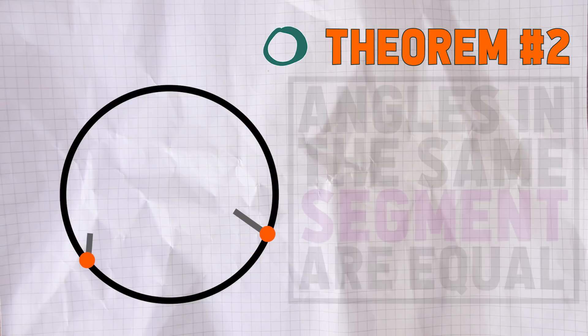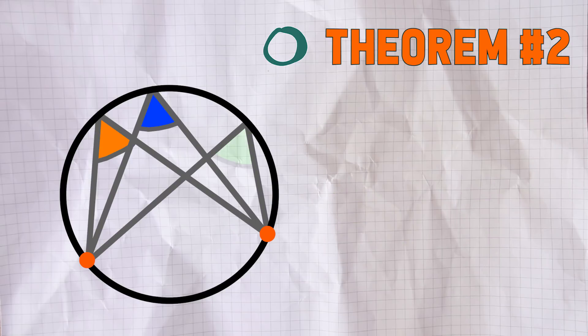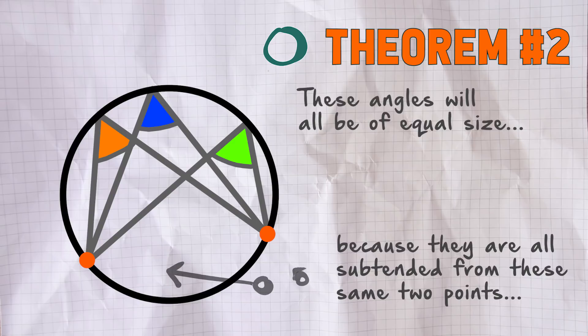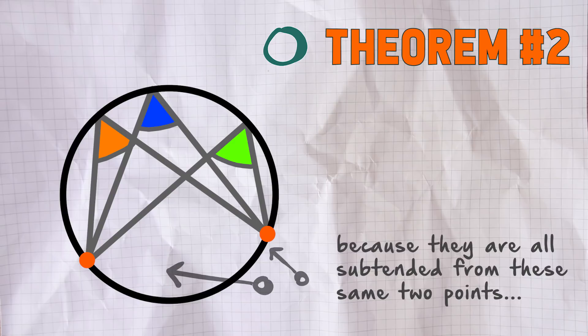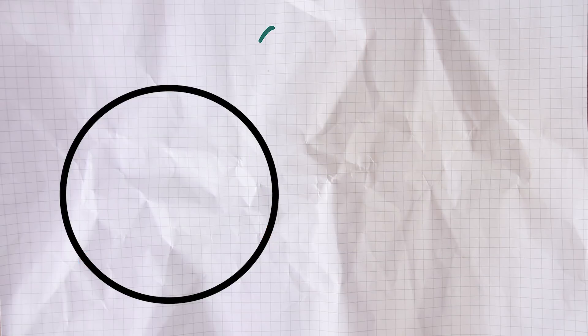Theorem number two: angles in the same segment are equal. Any angle created or subtended from those same two points will always be the same size, as long as they're in the same segment of the circle — in other words, the same side of those two points on the circumference.